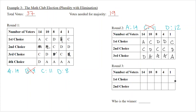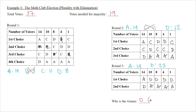On to round three, we eliminate Carmen, leaving just Alicia and Dave. Recounting the votes: Alicia still has 14 first place votes, and Dave now has 23. Dave has more than half of the votes, so he is our winner.